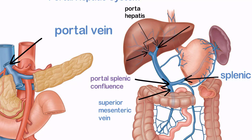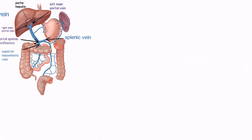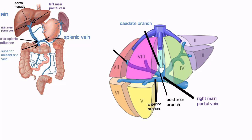At the porta hepatis, the portal vein branches into right and left main portal veins, which then follow the course of the right and left hepatic arteries. The right main portal vein first sends branches to the caudate lobe, segment 1, and then divides into anterior and posterior branches that subdivide into superior and inferior branches to supply the right lobe of the liver.